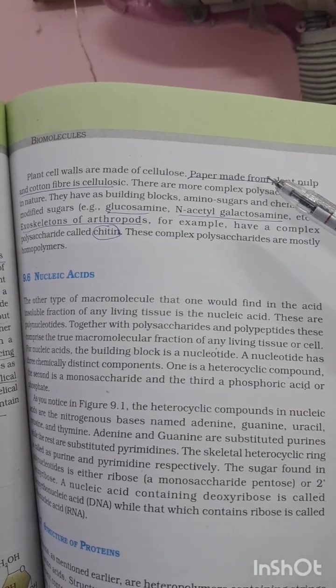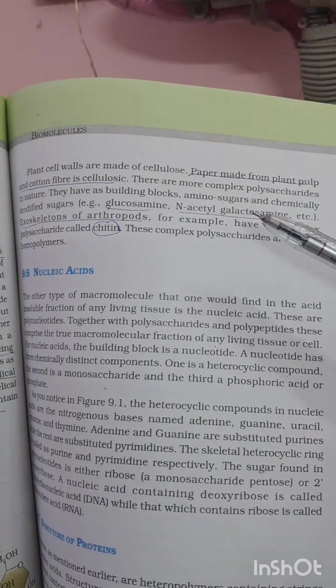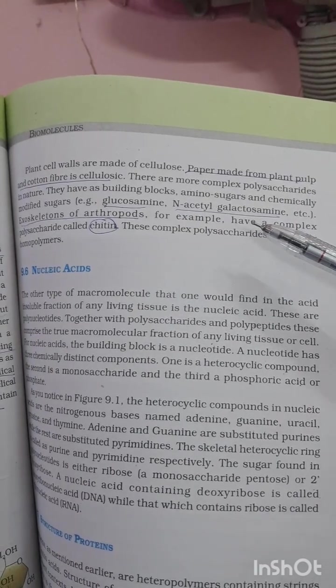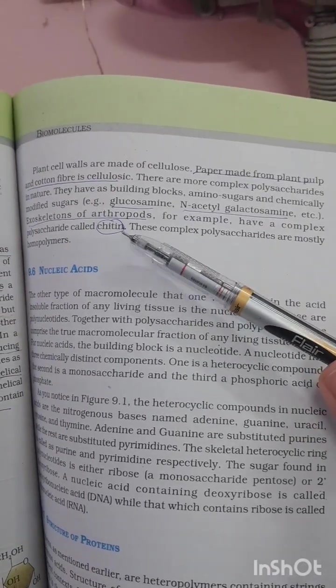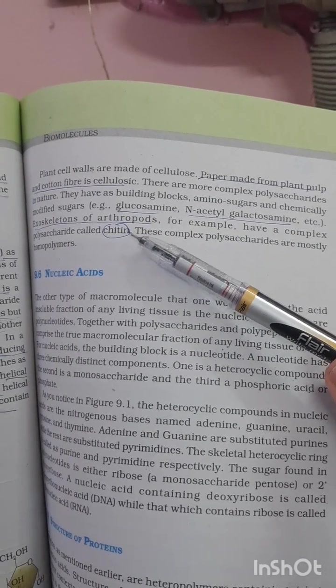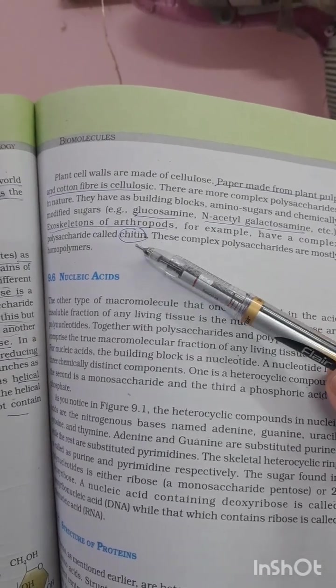For example, glucosamine and N-acetylglucosamine. One more important question is mentioned here: exoskeleton of arthropods is made up of complex polysaccharide that is chitin. This complex polysaccharide mostly are homopolysaccharides, but chitin you have to remember. Thank you.